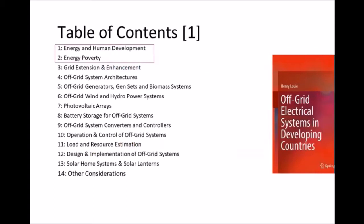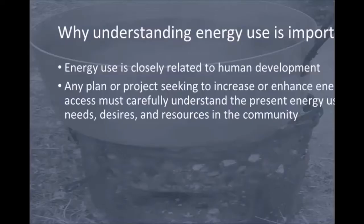If you look at the book, there are 14 chapters. Today's webinar is going to cover really the first two of those chapters — energy and human development, and energy poverty. The rest of the book focuses on technical aspects of off-grid electrification. But I think it's very important that we begin by grounding ourselves in what the present energy situation is in many of the communities that you might hope to serve. The book also has many examples, problems, and a more in-depth treatment than what I'll be able to cover today.